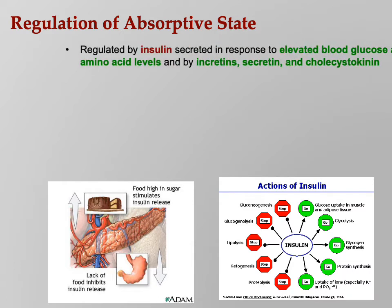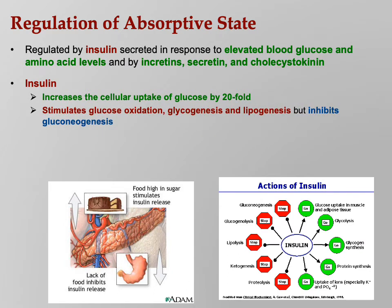How do we regulate the absorptive state? Insulin is secreted in response to elevated blood glucose and amino acid levels, and also by incretin, secretin, and cholecystokinin — those hormones we talked about when we looked at the liver, small intestine, and pancreas. Insulin increases cellular uptake of glucose by 20-fold. Cells can get glucose in under normal situations, but insulin makes it much easier. It also stimulates glucose oxidation — the burning of glucose for fuel — as well as glycogenesis and lipogenesis. If we're pulling sugar out of the blood, we have to put it somewhere: we turn it into glycogen or fat. It will also inhibit gluconeogenesis — if you've already got a bunch of glucose in the blood and you're trying to pull it out, why would you make more?